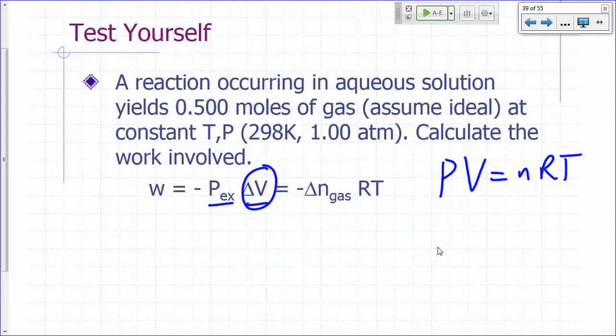And pretty much you can ignore the changes in the volume of whatever solid or liquid you have there. You can just ignore the solids and liquids. The change in the volume will be pretty much the change in the volume of the gas. So if the volume of the gas changes, how do you calculate that from your ideal gas equation?